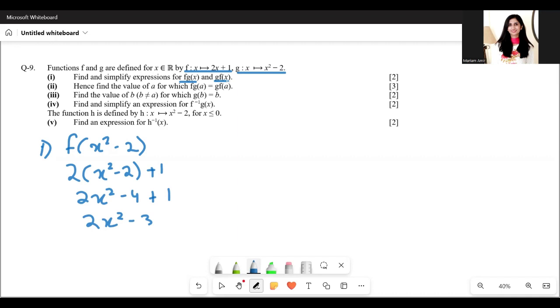Next we need to find g(f(x)). So we have to substitute f in g(x). In g we substitute f(x), which is 2x plus 1. This would be (2x plus 1) squared minus 2, which gives 4x squared plus 4x plus 1 minus 2. So 4x squared plus 4x minus 1.